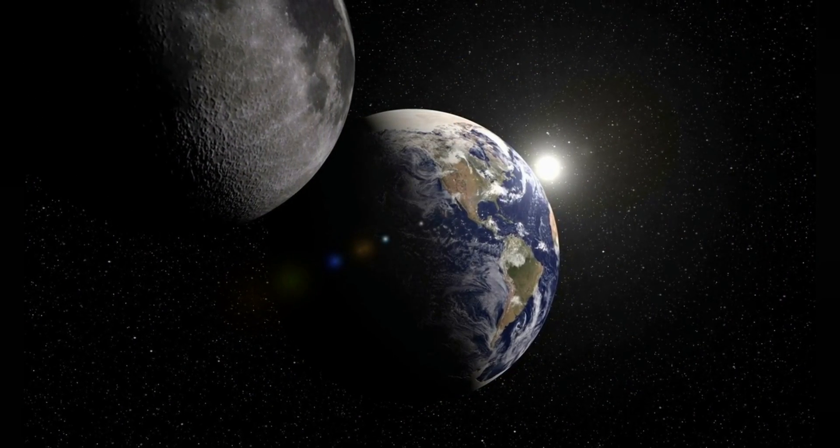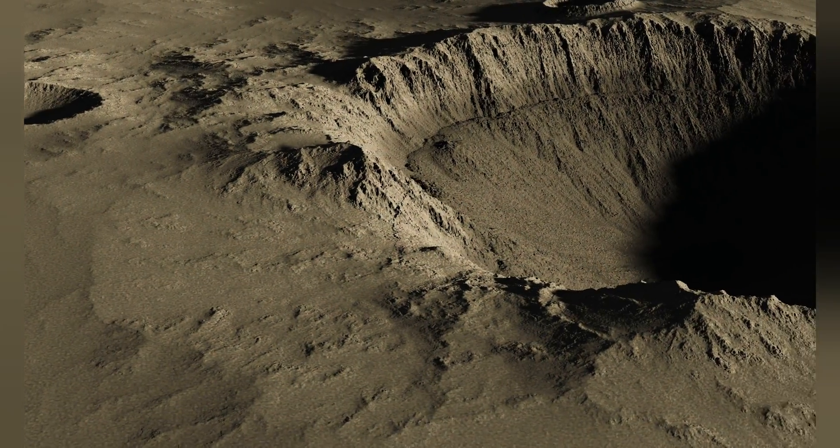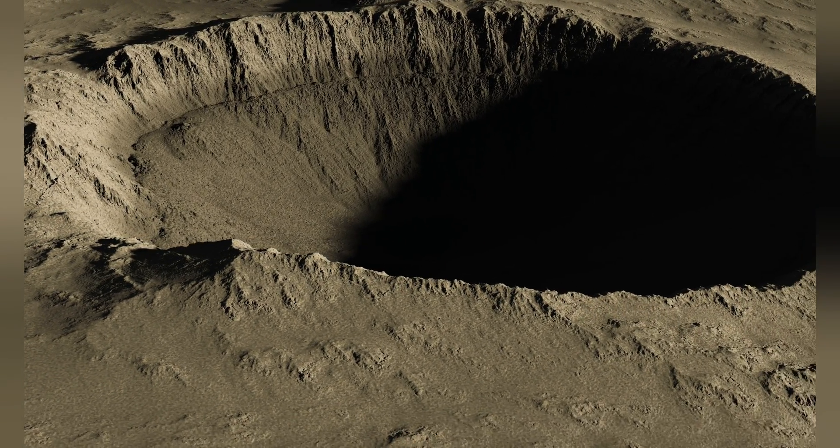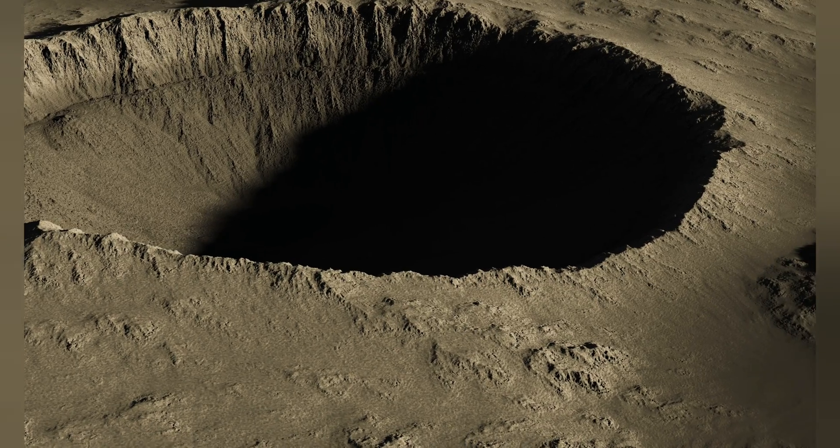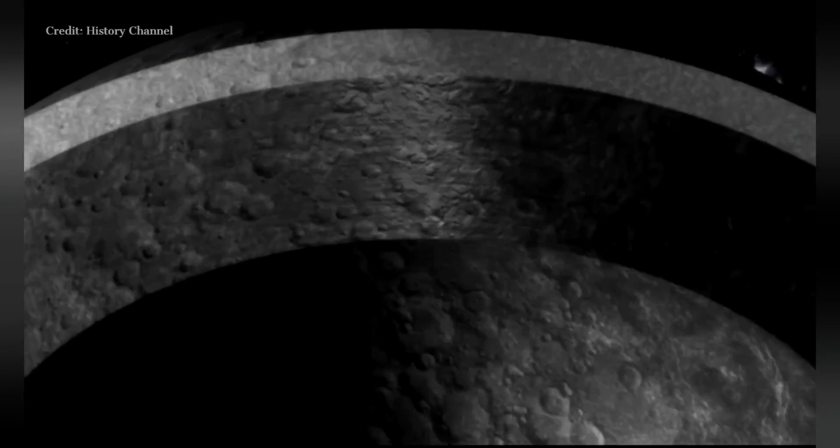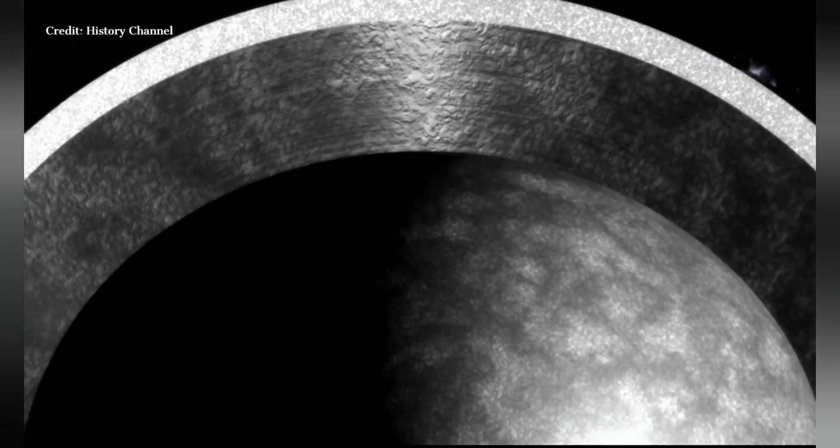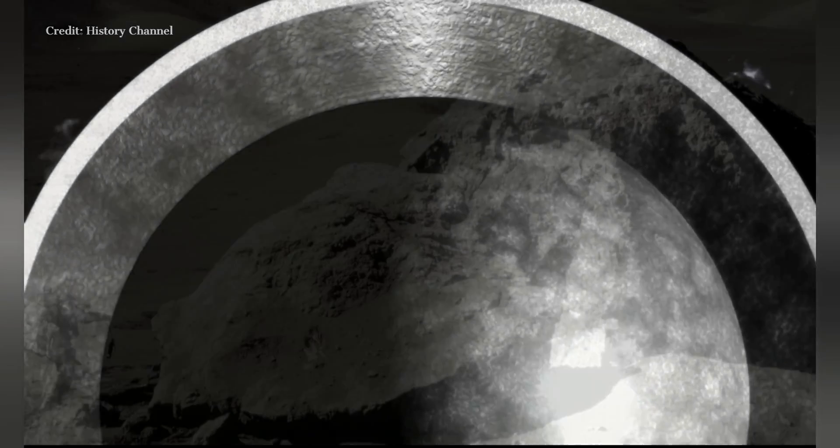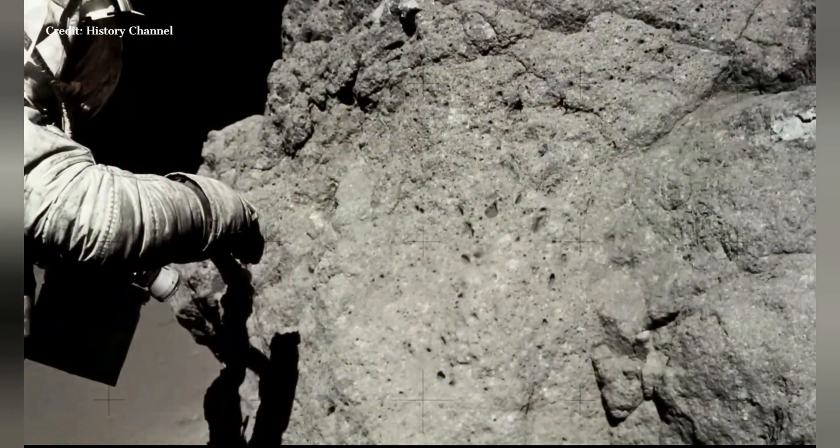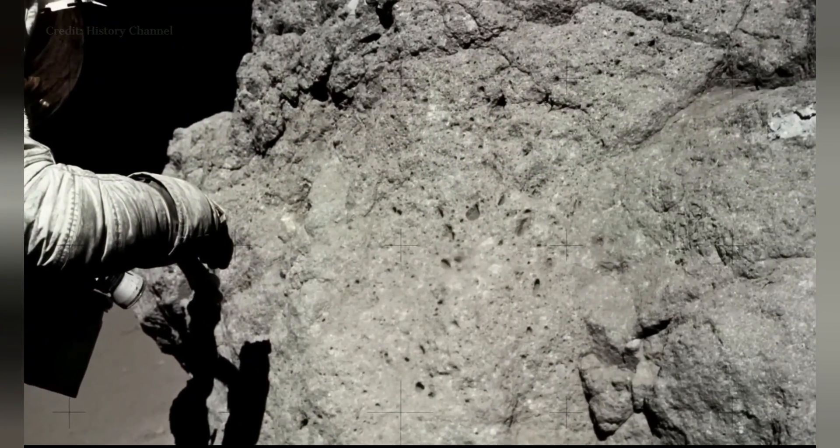Thirdly, composition. The composition of our moon is also very different from other moons in the solar system. The moon's surface is made up of a basaltic crust which is rich in iron and magnesium, and its interior is thought to be composed of a mixture of iron, magnesium, and silicon. This composition is very different from other moons, which are typically composed of ice and rock.